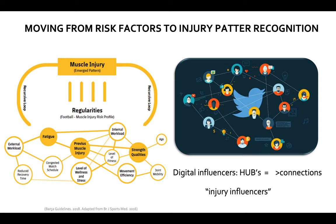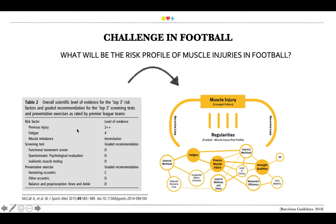This is why pattern recognition — finding simple rules and order behind the connections — could help us uncover the complexity behind sports injuries. We have a challenge in football: what will be the risk profile of muscle injuries? In 2018 Eoin McCOid gave me an interesting challenge and provided a list of risk factors related to the top three, and asked me to build the web of determinants related to muscle injury. We published that in the Barcelona guidelines, and I'm really proud and humbled to be part of that team.